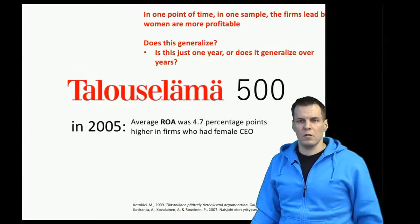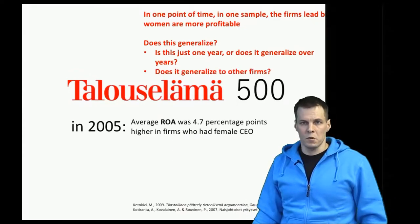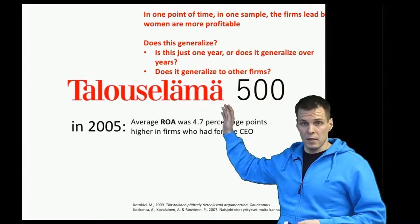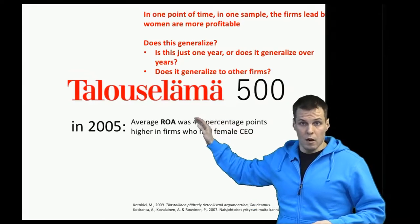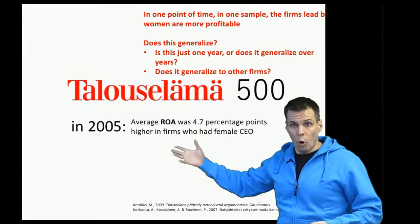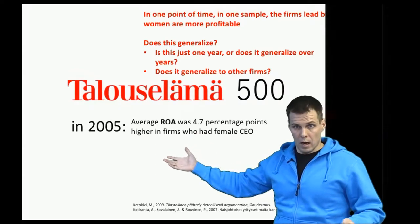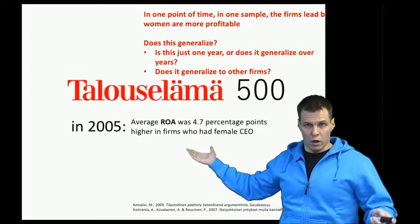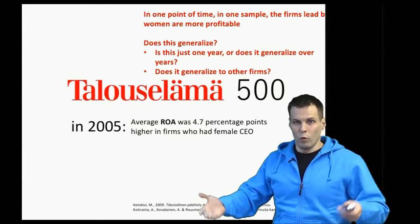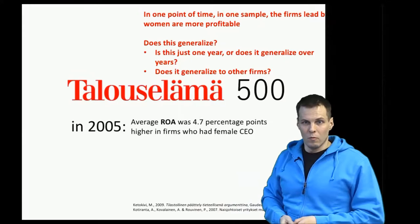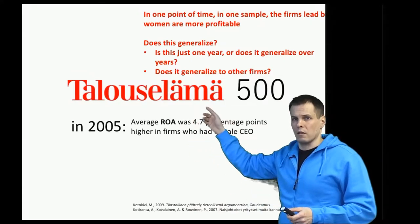The second question is: does it generalize to other firms? Is it just these 500 companies in which the women-led companies are more profitable, or does it generalize to the thousand largest companies, all companies in Finland, or all companies in all countries? How widely can we generalize?